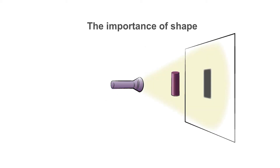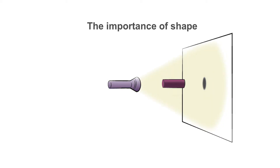We take a solid cylinder and stand it upright. If we shine a light beam on the cylinder so that the beam direction is perpendicular to the cylinder, the shape of the shadow is a rectangle. If the cylinder is positioned parallel to the X-ray beam, the shadow produced is a circle.